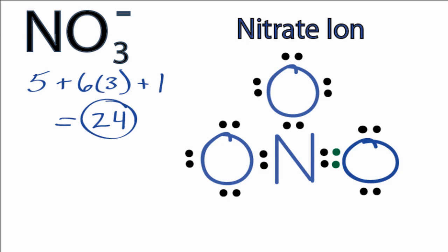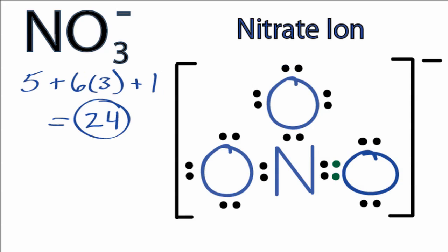One last thing we do need to do is put brackets around the structure to show that it's an ion. So that's the Lewis structure for the nitrate ion.